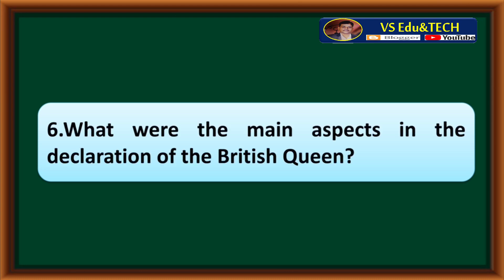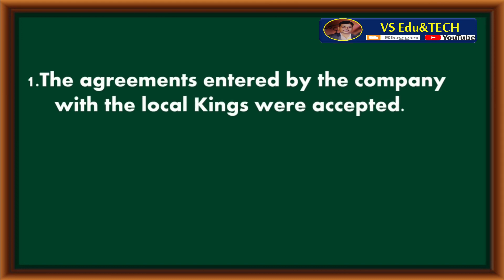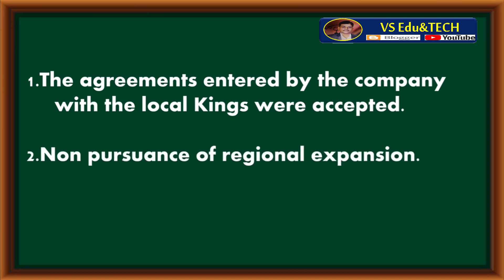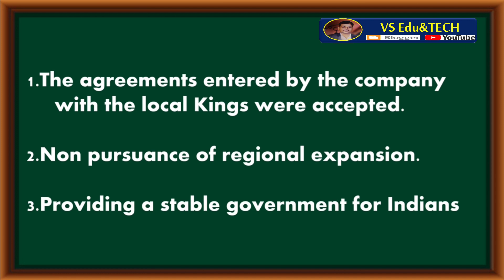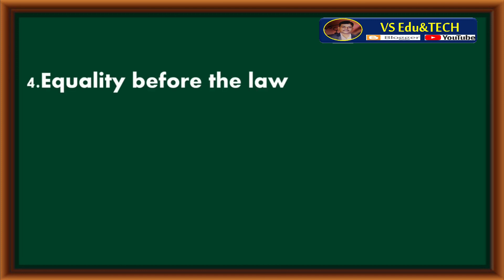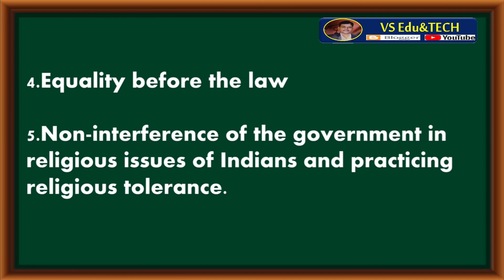Question number 6: What were the main aspects in the declaration of the British Queen? The agreements entered by the company with the local kings were accepted. Non-pursuance of regional expansion. Providing stable government for Indians. Equality before the law, non-interference of the government in religious issues of Indians, and practicing religious tolerance. These were all the main aspects in the declaration of the British Queen.